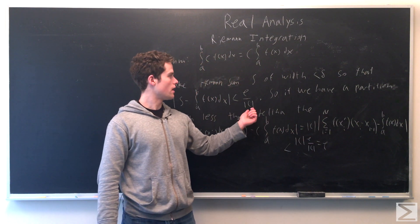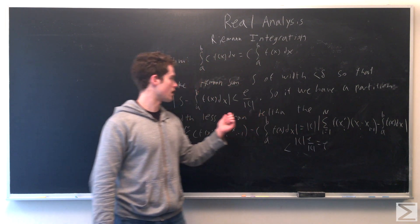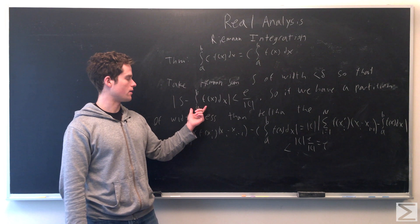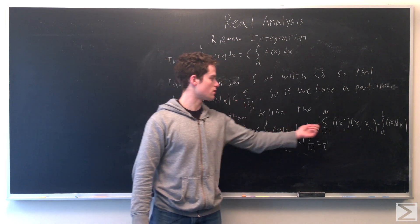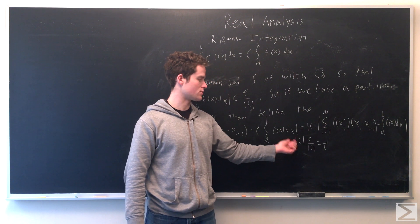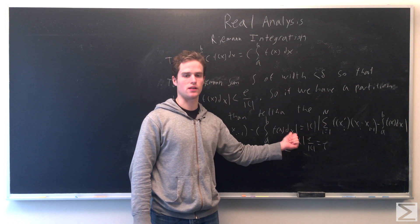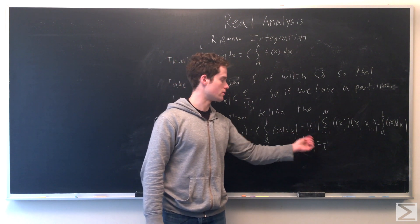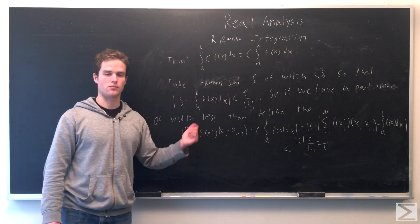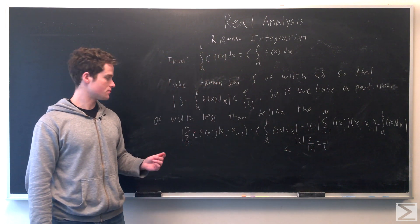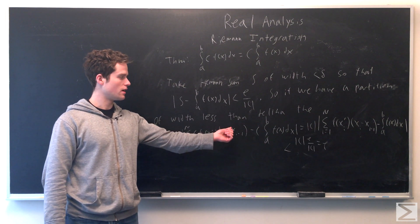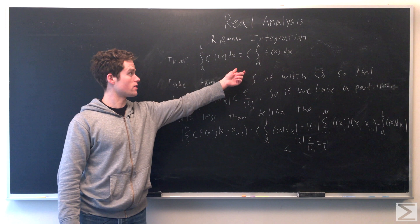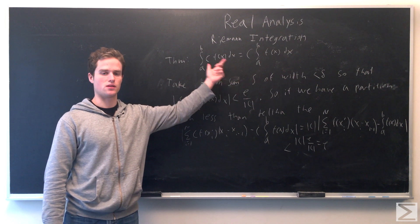Since the partition is less than δ, this difference will be less than ε/|c|. So this is strictly less than |c| times ε/|c|, which equals ε - ε being some arbitrary real number greater than 0. So we see this Riemann sum will get as close as we want to this thing on the right side, and so we see these two are equal.